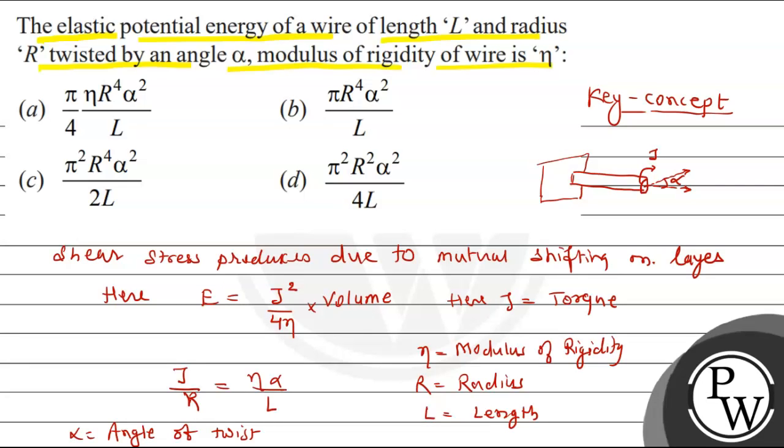Upon 4L, pi, eta, R to the power 4, and alpha square. Option A, this is the right option. I hope you understood it well. Best of luck.